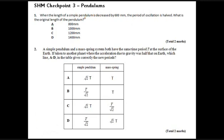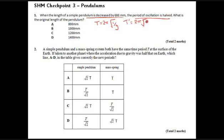We've decreased the length by 600 millimeters and the period of oscillation has been halved. The way to do this properly is: here's our original pendulum, t = 2π√(l/g). Here's our new pendulum — t-dash equals 2π√(l-dash/g), so our new pendulum has a different period t-dash because it has a different length l-dash.